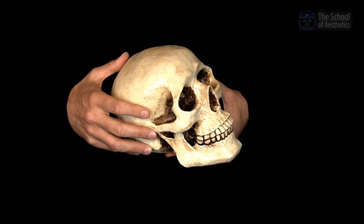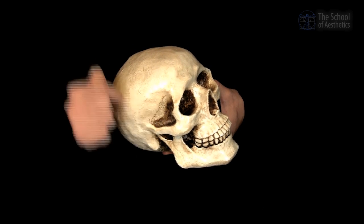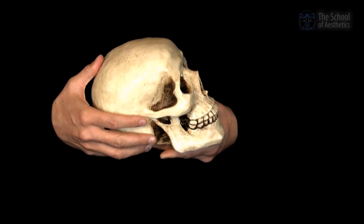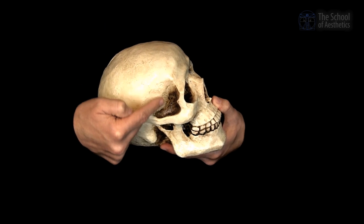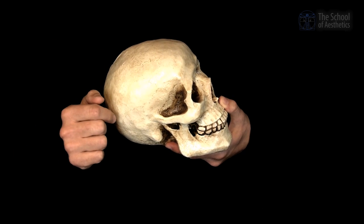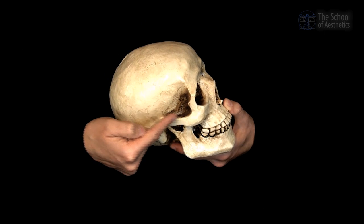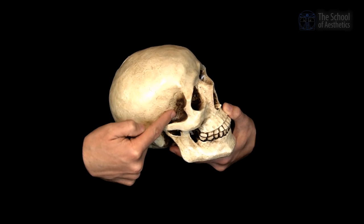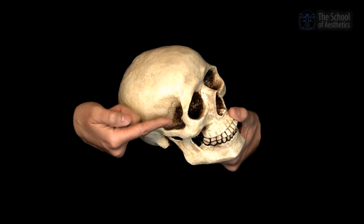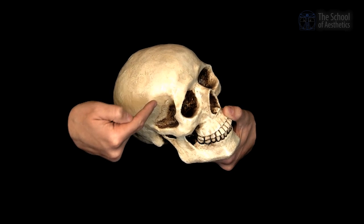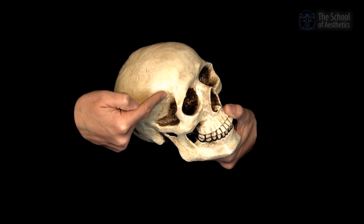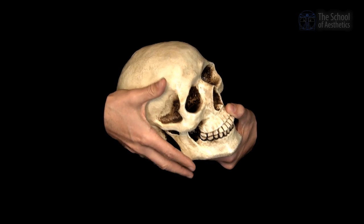One of the most interesting parts for volume replacement is the temples. When getting to the temples — here we have the sphenoid bone — we have to be aware that depending on where we place our syringe or cannula, we may require more or less product. The closer we go down into the zygomatic arch, the greater the volume requirements. A suggestion to minimize the impact is to go a little bit higher and with a needle or cannula just touch the sphenoid bone, using a bolus technique for delivery of the product followed by massage.